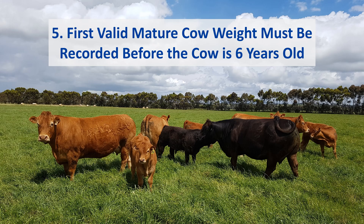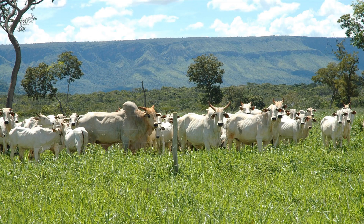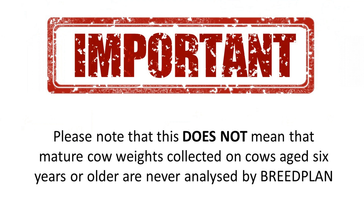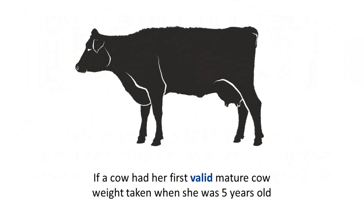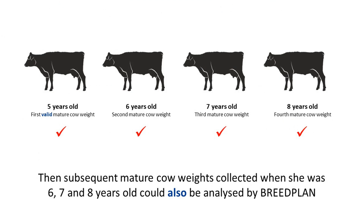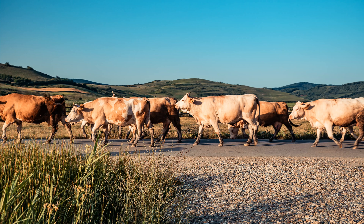Additionally, breed plan will only analyse the mature cow weight performance of a cow if her first valid mature cow weight is collected before she is 6 years or 2,200 days of age. If she is older than this when her first valid mature cow weight is collected, then none of her mature cow weights will be analysed. Please note that this does not mean that mature cow weights collected on cows aged 6 years or older are never analysed by breed plan. If a cow had her first valid mature cow weight taken when she was 5 years old, then subsequent mature cow weights collected when she was 6, 7 and 8 years old could also be analysed by breed plan. This will be particularly relevant for those who start off collecting mature cow weights in their herd where cows are a range of ages.